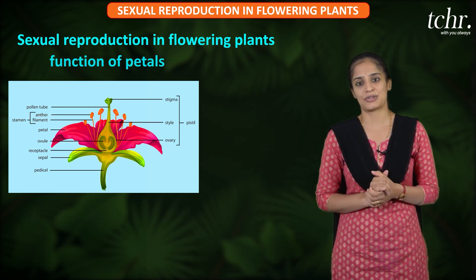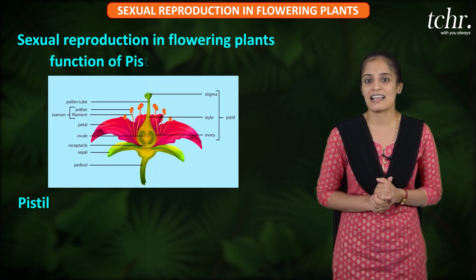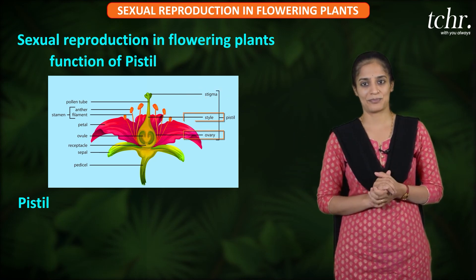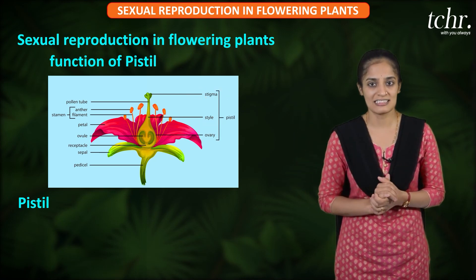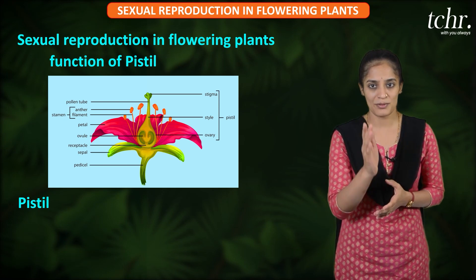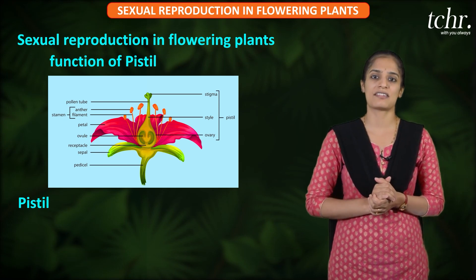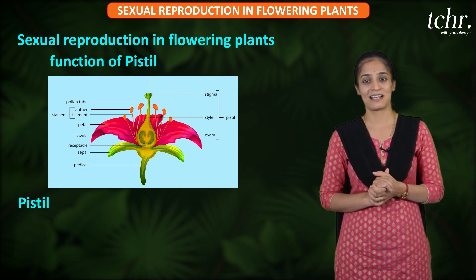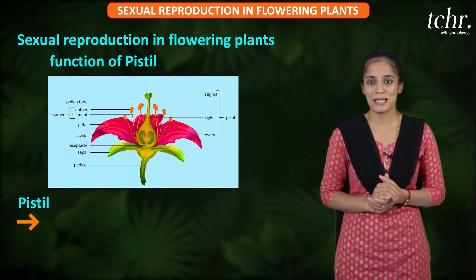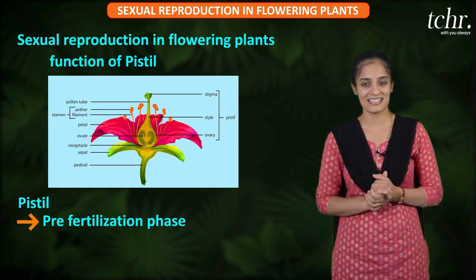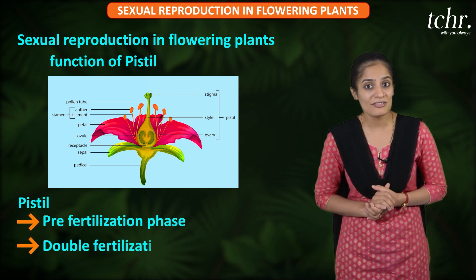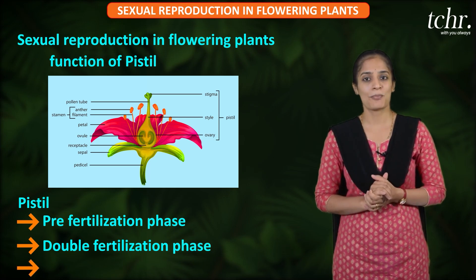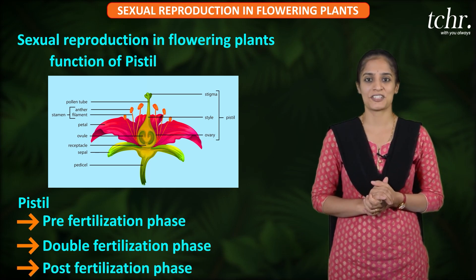Coming to the process of sexual reproduction in flowering plants, there are three phases. First is the pre-fertilization phase. Second is the double fertilization phase. Third is the post-fertilization phase.